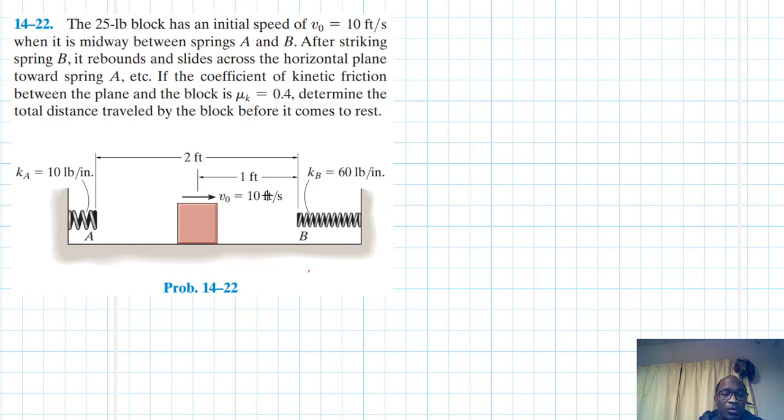So this is the block with an initial speed of 10 feet per second and this is how we are going to solve it. We are going to solve it in parts. We are using the principle of work and energy. So kinetic energy, initial kinetic energy of the block plus the total work from 1 to 2 is just equal to the final kinetic energy.